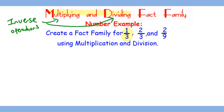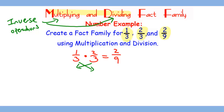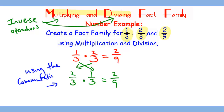The example given is 1/3, 2/3, and 2/9. We need to connect them using multiplication and division. The first number sentence we can write is 1/3 times 2/3 gives you 2/9. We can also switch the two factors and rewrite it as 2/3 times 1/3 equals 2/9. This is using the commutative property.